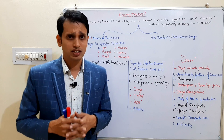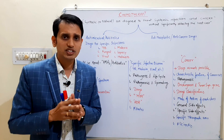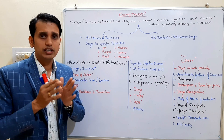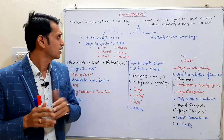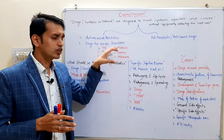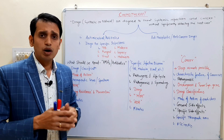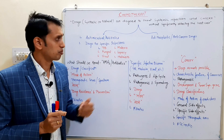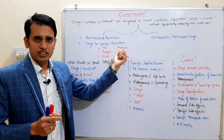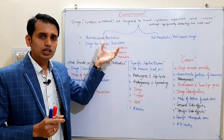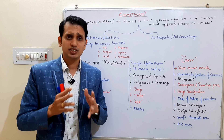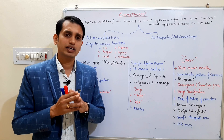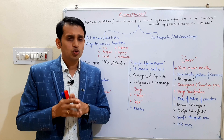Chemotherapy drugs are categorized into two parts. First is the antimicrobial drugs or antibiotics — drugs used to treat specific infections or infective organisms or pathogens like TB, fungal, viral, malaria, leprosy, or helminths. The second category is the anti-cancer or anti-neoplastic drugs — those drugs which are used for the treatment of cancers.